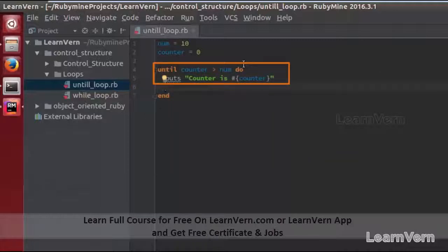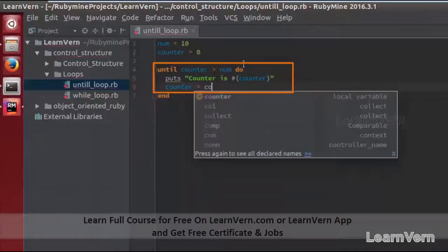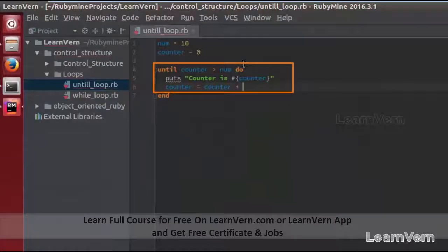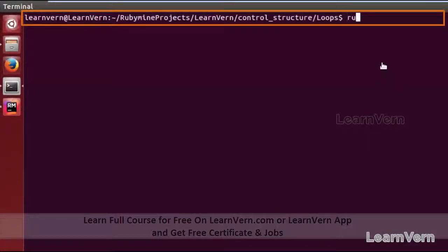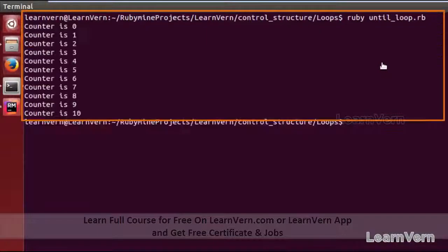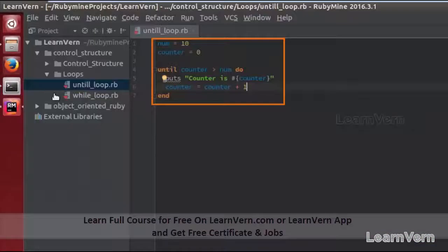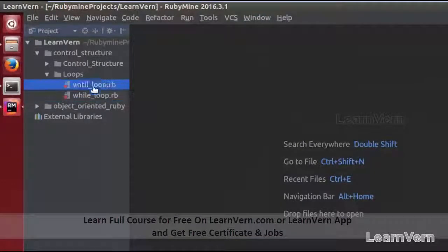Let's run the program ruby, and it will iterate from 0 to 10. So this is how we can work with until loop in Ruby.